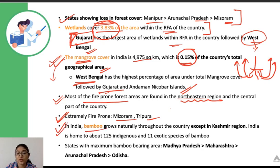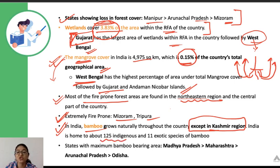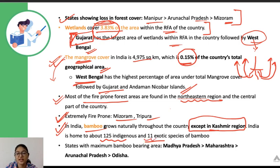Bamboo grows naturally throughout the country except in the Kashmir region. India is home to about 125 indigenous species of bamboo and 11 exotic species. Bamboo can be grown in different agro-climatic conditions across India.